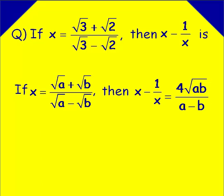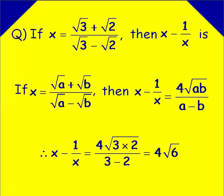In our problem, in place of a we have 3 and in place of b we have 2. Therefore x minus 1 by x equals 4 into square root of 3 into 2, divided by a minus b, which equals 4 root 6. So these are the two model problems in the chapter sets.